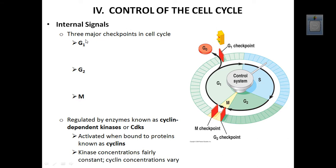There are also external signals that control the cell cycle. Certain growth factors released by cells can stimulate other cells to divide. For example, PDGF — platelet-derived growth factor — causes production of more platelets when present. Erythropoietin is another that causes production of red blood cells. These external signals from one cell can touch receptor sites on the next cell and signal it to start dividing if need be.